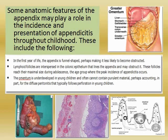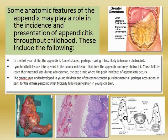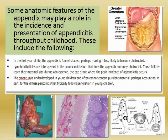Some anatomic features of the appendix may play a role in the incidence and presentation of appendicitis throughout childhood. In the first year of life, the appendix is funnel-shaped, perhaps making it less likely to become obstructed. The picture with the scalpel shows the large funnel-shaped appendix in the lower part of the specimen.